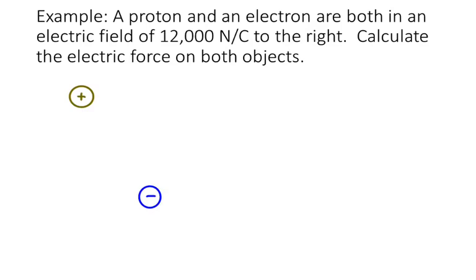So let's take a simple example. Suppose we have a proton and electron that are both in an electric field of 12,000 newtons per Coulomb to the right. We're going to figure out the electric force on both the proton and the electron.